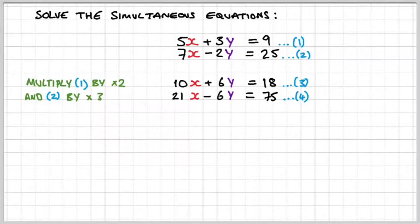Okay, so now if you look closely, you should be able to eliminate one of the variables. It's not the x because the coefficients are 10 and 21. It's the y because both the coefficients are 6. Well, actually you've got plus 6 and negative 6.